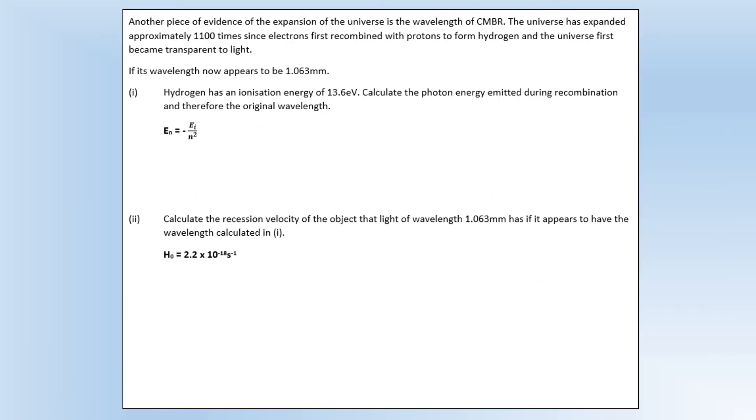Okay, so another piece of evidence of the expansion of the universe is the wavelength of cosmic microwave background radiation. So the universe has expanded approximately 1100 times since electrons first recombined with protons to form hydrogen and the universe first became transparent to light, which is why it still exists now. So if its wavelength now appears to be 1.063 millimeters, that's what we're looking at now. So what we're going to calculate is the original photon energy and therefore the original wavelength of CMBR. So we've got the ionization energy of hydrogen and we've got an equation there. So what we can do is calculate photon energy by finding the difference between the energy at the ionized state and the energy at the ground state, which is what you can see there. So once we've got the photon energy, what we can do is then calculate the wavelength using this equation right here. Plug the numbers in and we get a wavelength of 9.14 times 10 to the minus 8 meters or about 91 nanometers.